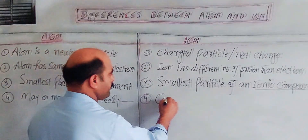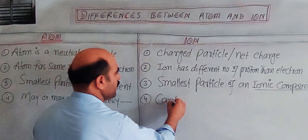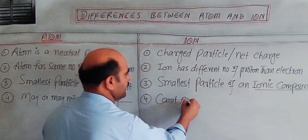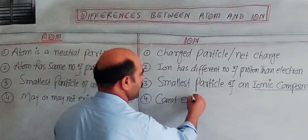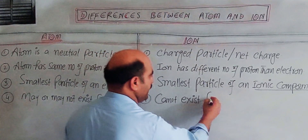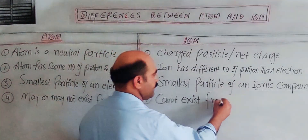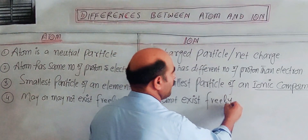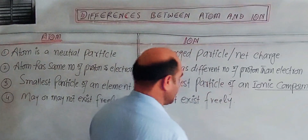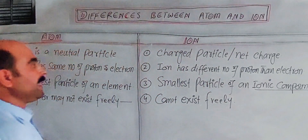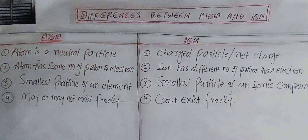An ion, however, cannot exist freely on its own. It cannot exist independently under normal conditions.